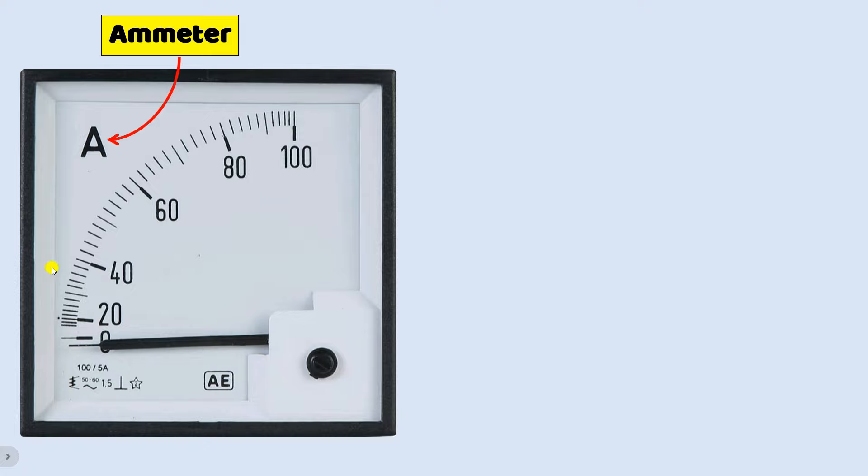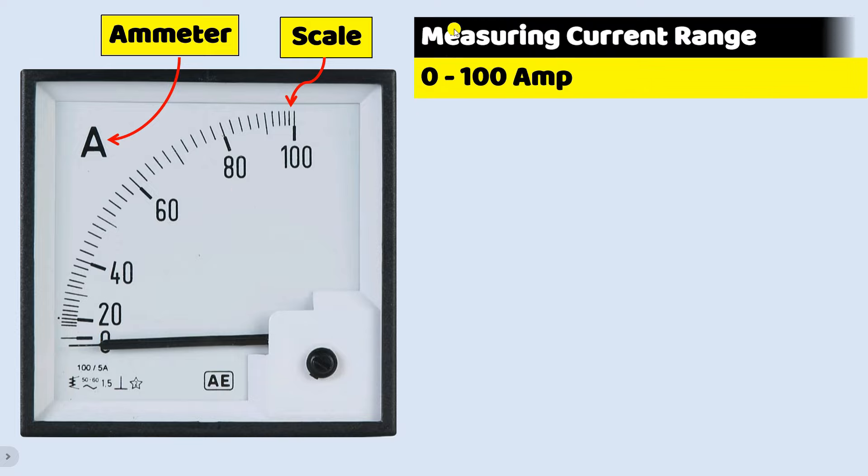Now above this ammeter you will see some lines. We call this line as scale. Now on this scale you will see numbers like 0, 20, 40, 60, 80, 100. In this number you can see first 0 is written here and then 100 is written at the end. So this number is called measuring current range. It means how much is the current measuring range of this ammeter. It tells us this detail.